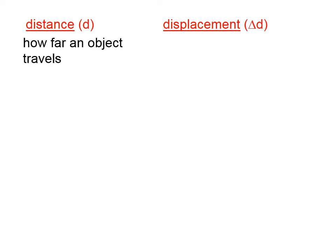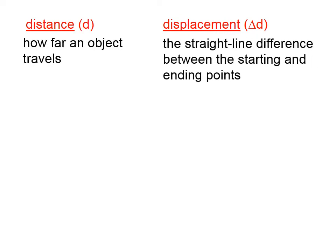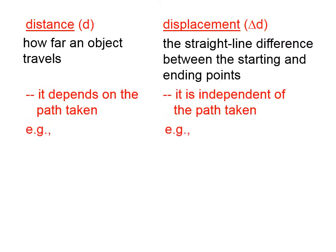Distance, which I symbolize by lowercase d, is how far an object travels. Displacement, which I symbolize delta d, is the straight line difference between the starting and ending points. Distance depends on the path taken. Displacement is independent of the path.